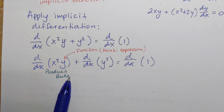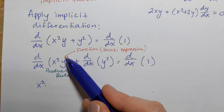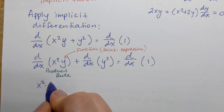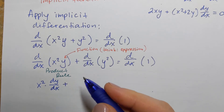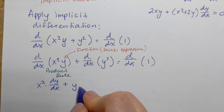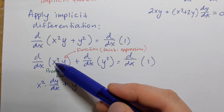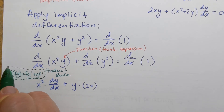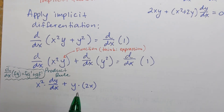Applying the product rule: take the first factor, x squared, multiplied by the derivative of the second factor. Since y is a function, we write that derivative as dy/dx. Plus the second factor y, multiplied by the derivative of the first factor x squared, which is 2x. So we get x squared times dy/dx plus y times 2x.